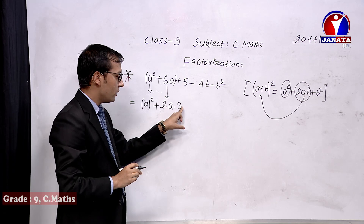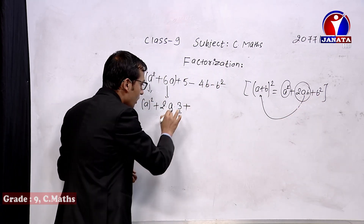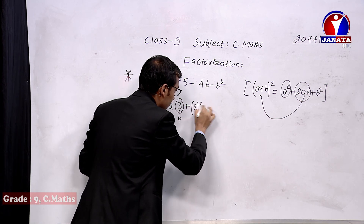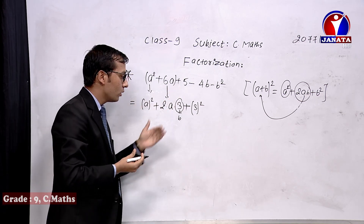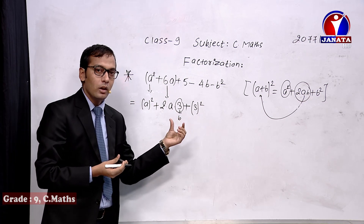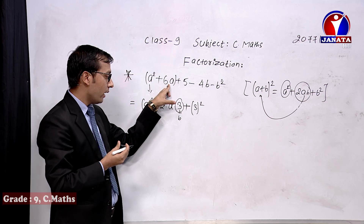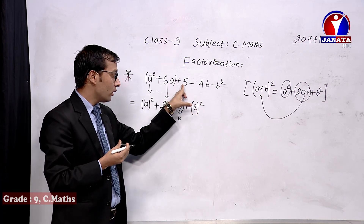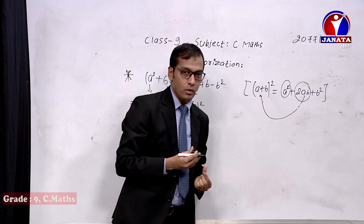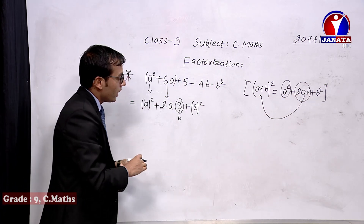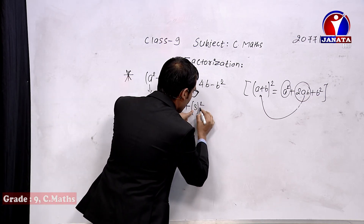The expanded form gives a² + 2ab + b², so the third term is b² = 3² = 9. Checking the original expression, a² and 6a are present, but 9 is not. So we are adding this extra term 9 to complete the square, and we must also subtract the same term — minus 3² — to keep the expression unchanged.